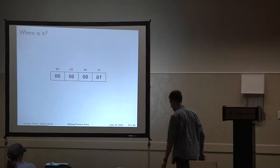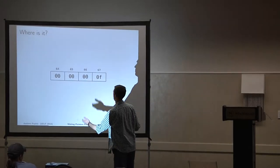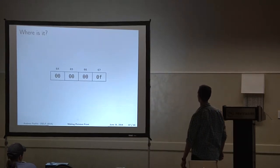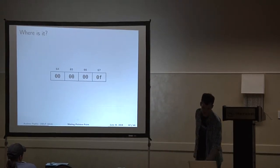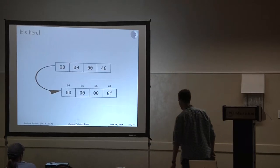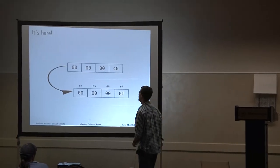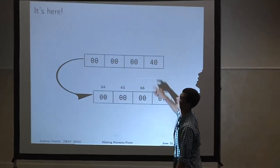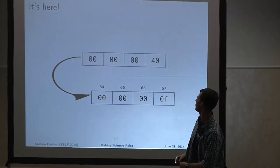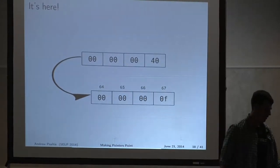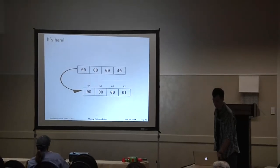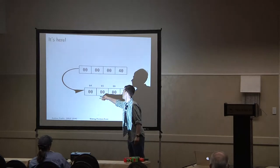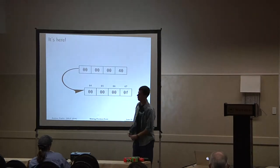There's clearly a bunch of numbers above the other numbers. It is at the value 64. So there's another integer-size value here — the value 64, or 0x40 in hex. That is actually pretty much it. It just is the value that points at the start of the object you're looking for.